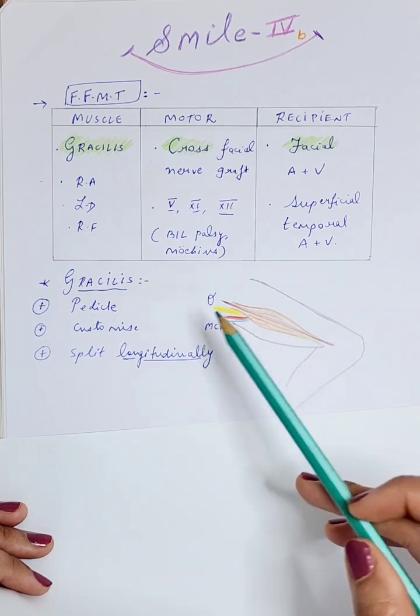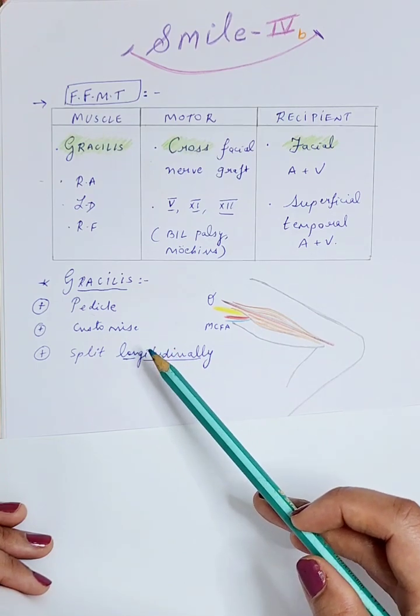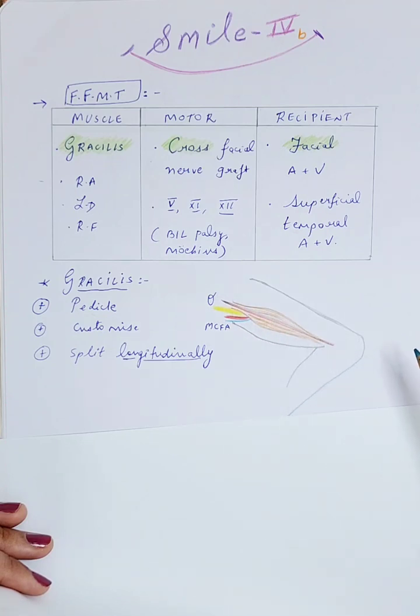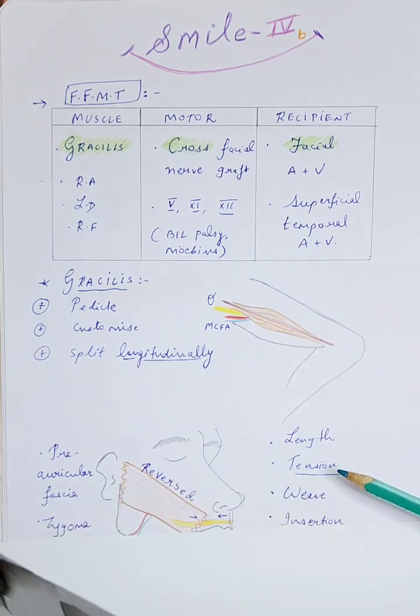This muscle is very versatile, meaning we can customize the muscle depending on the length and tension that we need. The most common way of harvesting is by splitting the muscle longitudinally, and then it is chosen and customized remembering the principles of muscle transfer. Why is the tension of the muscle very important? Because if we have transferred the muscle but it is flaccid, it is not going to work as we desire.